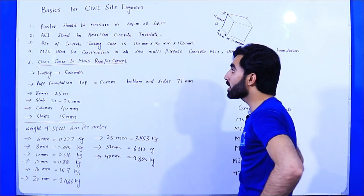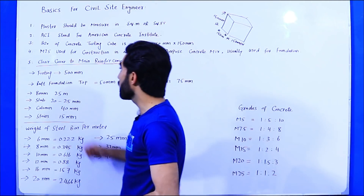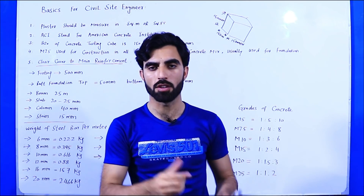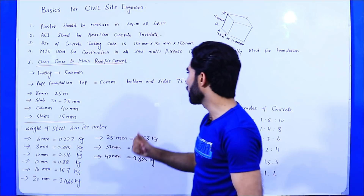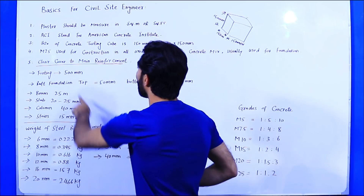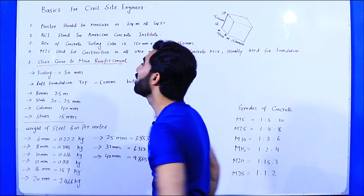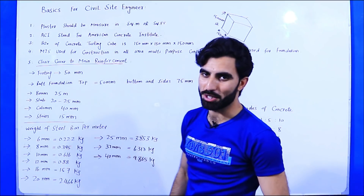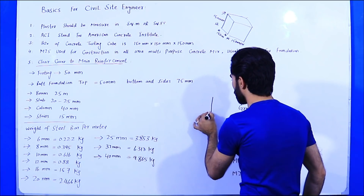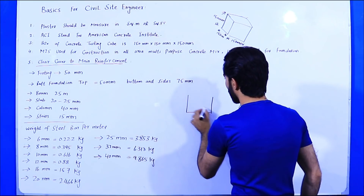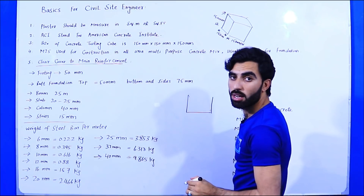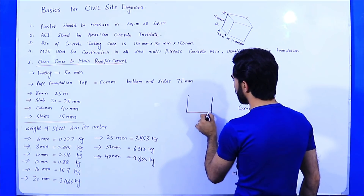The fifth point is clear cover to main reinforcement. Many students ask about the concrete cover or clear cover for beams, columns, slabs, etc. For footing, the concrete cover should be 50mm. For example, in a footing, we first provide the concrete cover of 50mm and then place the steel bars.